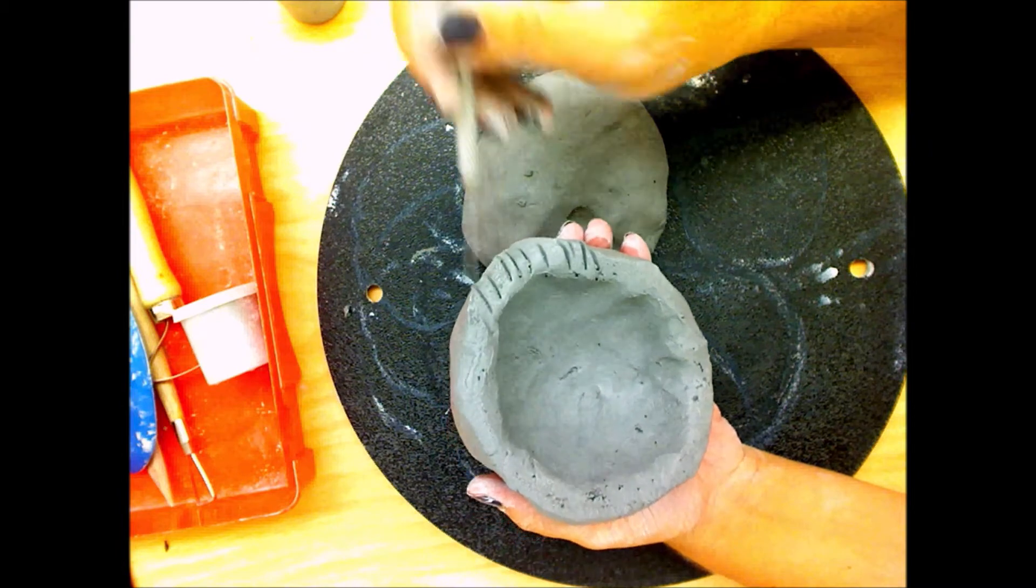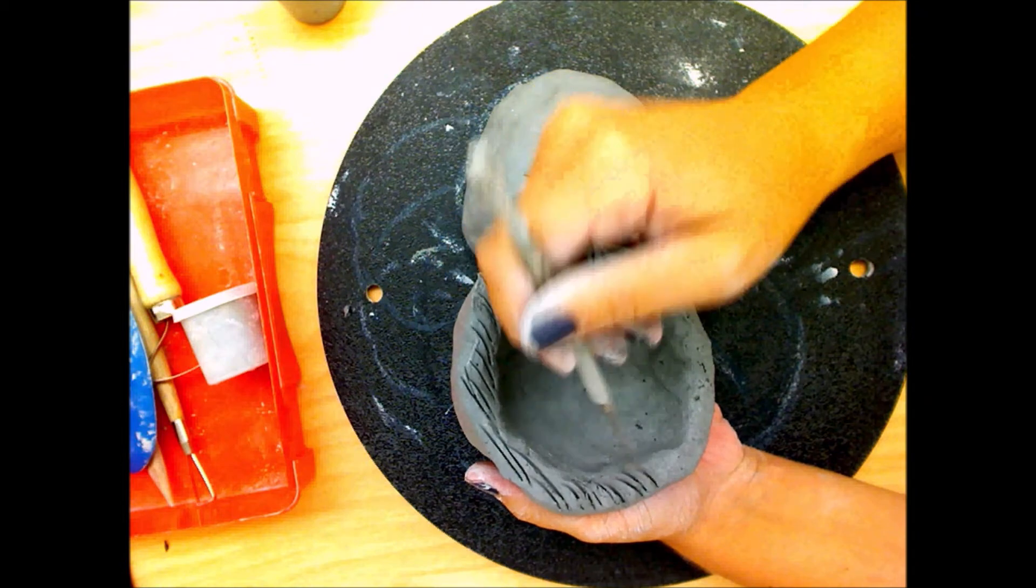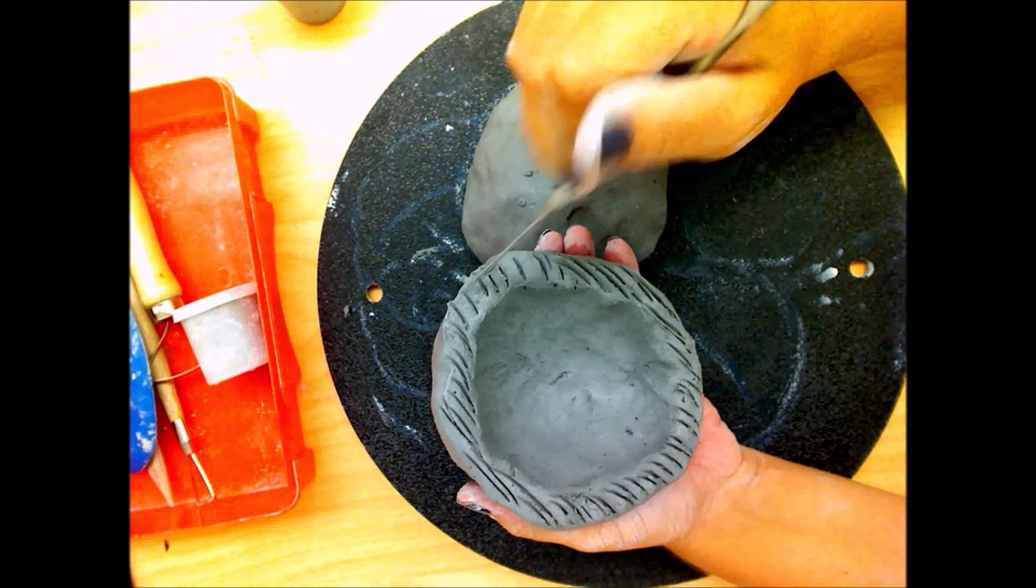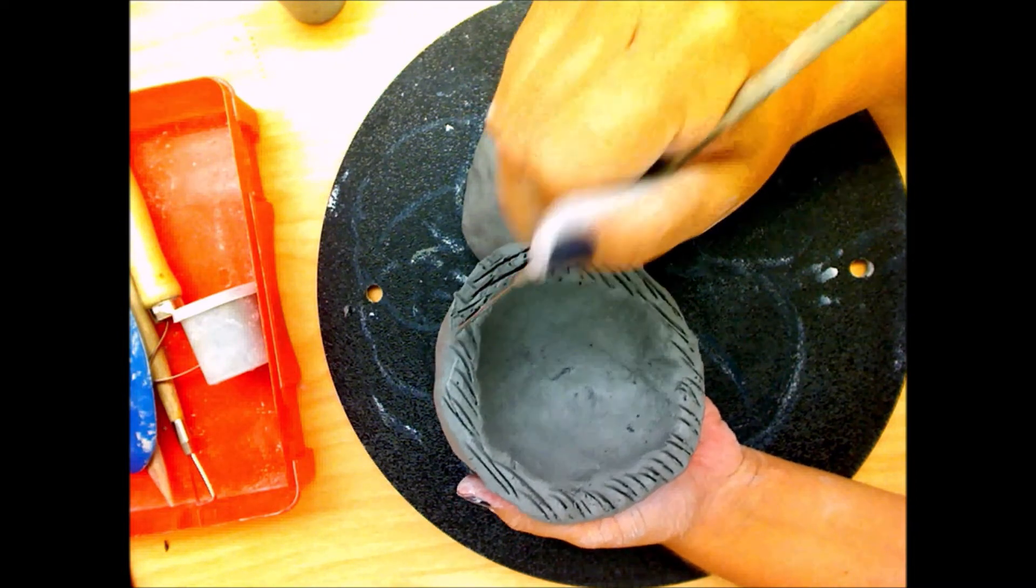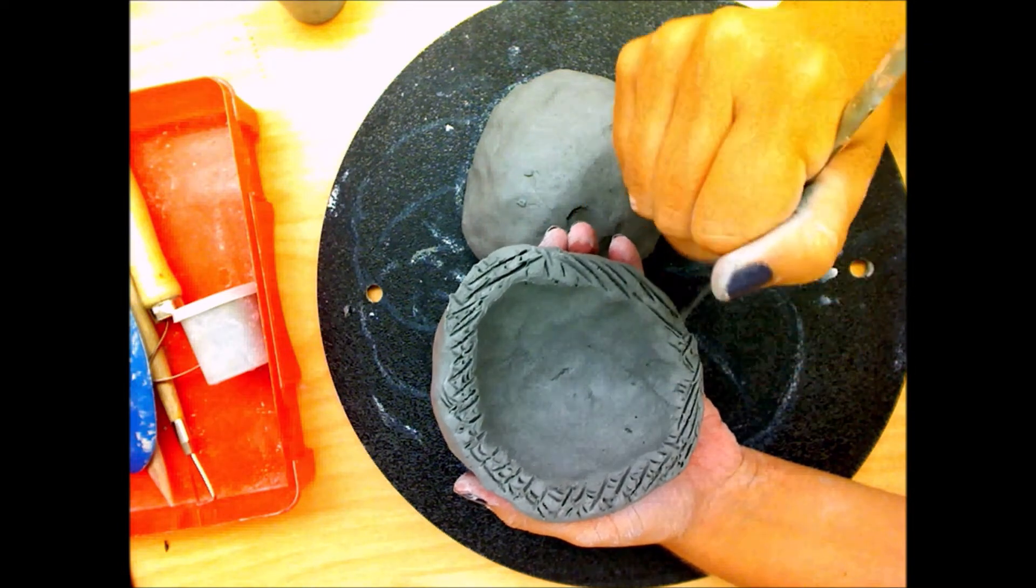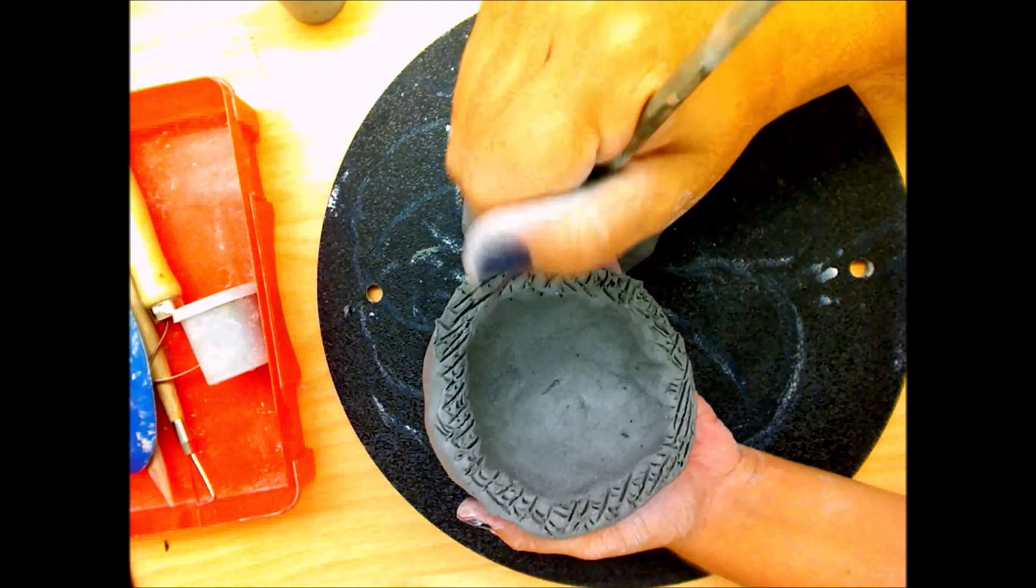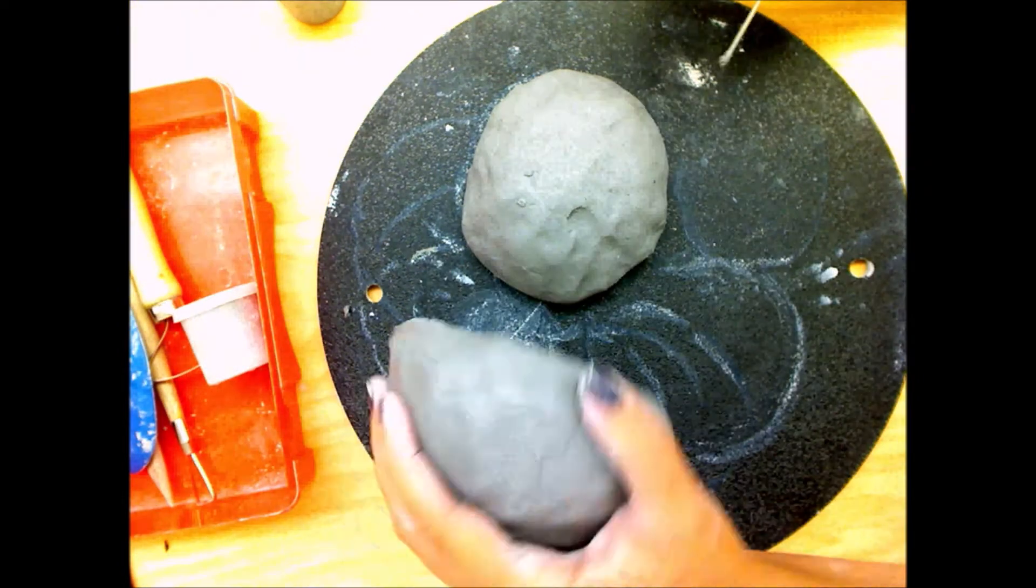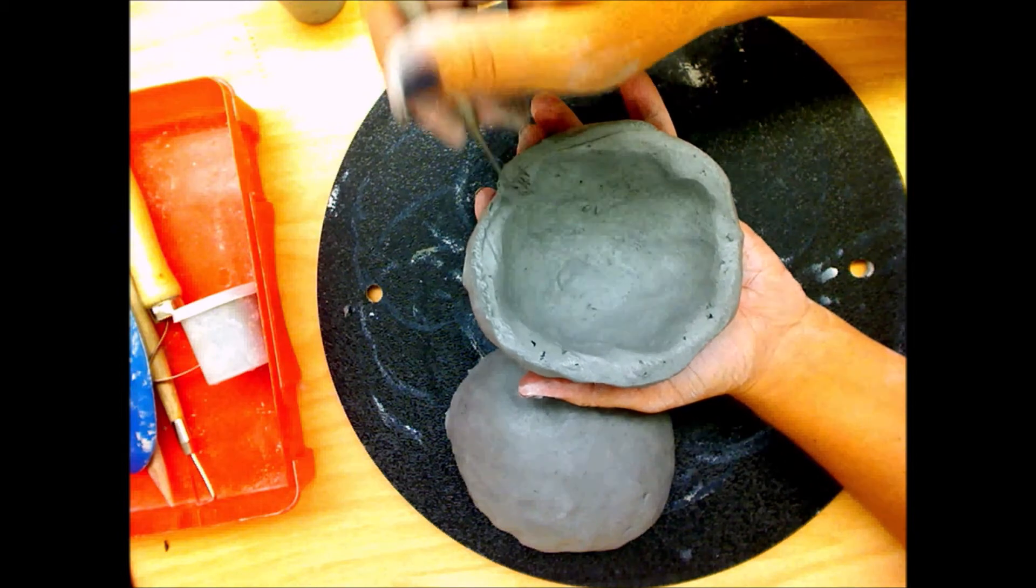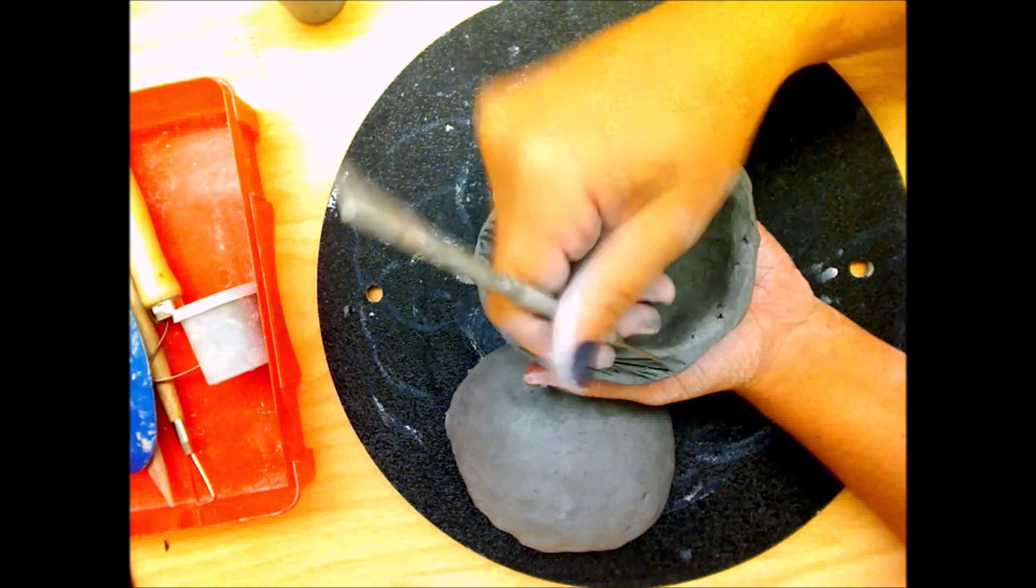You'll need to score. Anytime you're attaching clay to clay you need to score both sides of the attachment. Scoring is a series of gash marks or lines and you need to go two directions and really rough up that surface in order to create more surface area for that clay to form good and strong attachments. So this is me scoring one side of our body, one of our pinch pots. I'm going to set it down and then I'm going to score the other side.